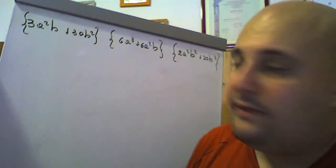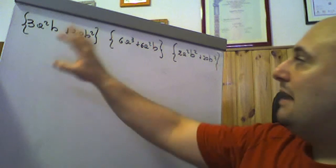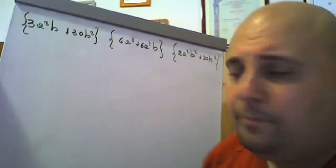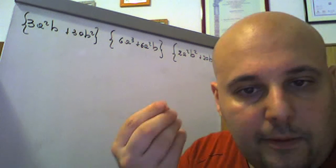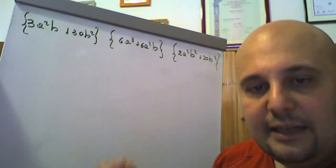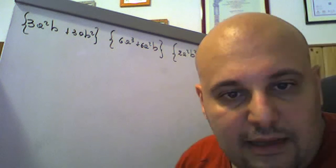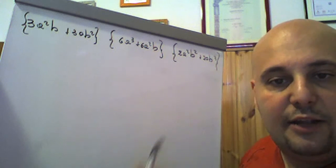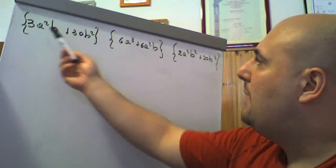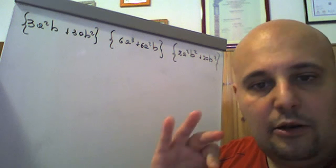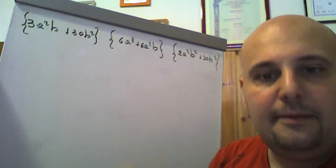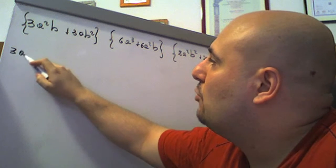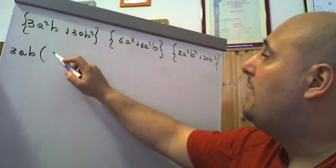Primo esercizio tratto da Bergamini, Trifone e Barozzi: determinare il massimo comune divisore fra i seguenti gruppi di polinomi. Per calcolare il MCD occorre scomporre in fattori i gruppi di polinomi. Il primo gruppo — 3A²B + 3AB² — si raccoglie a fattore comune 3AB, ottenendo 3AB·(A+B). Il secondo gruppo si raccoglie 6A², ottenendo 6A²·(A+B). Il terzo gruppo si raccoglie 2AB², ottenendo 2AB²·(A+B).